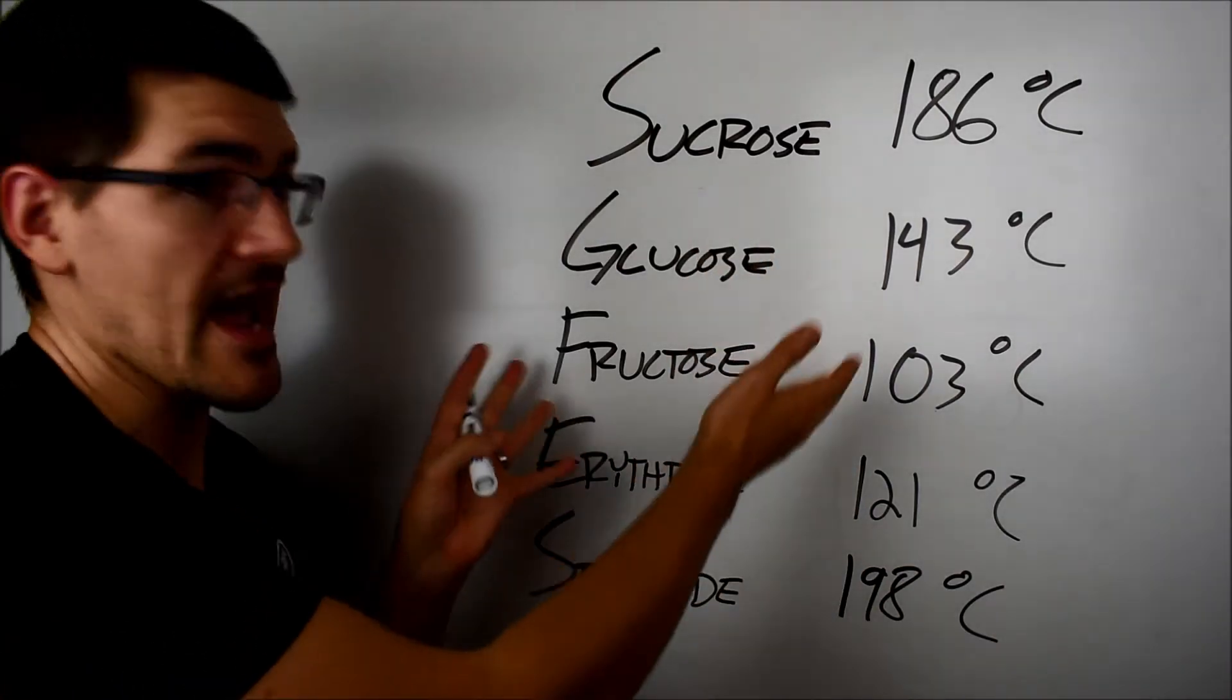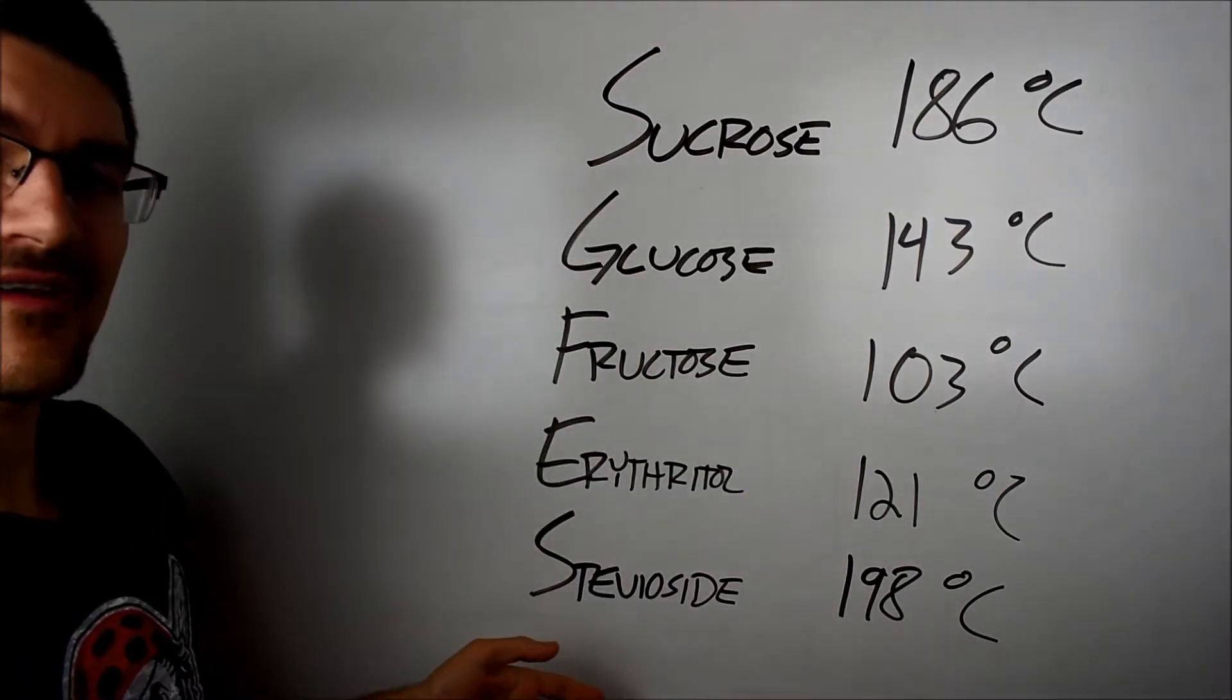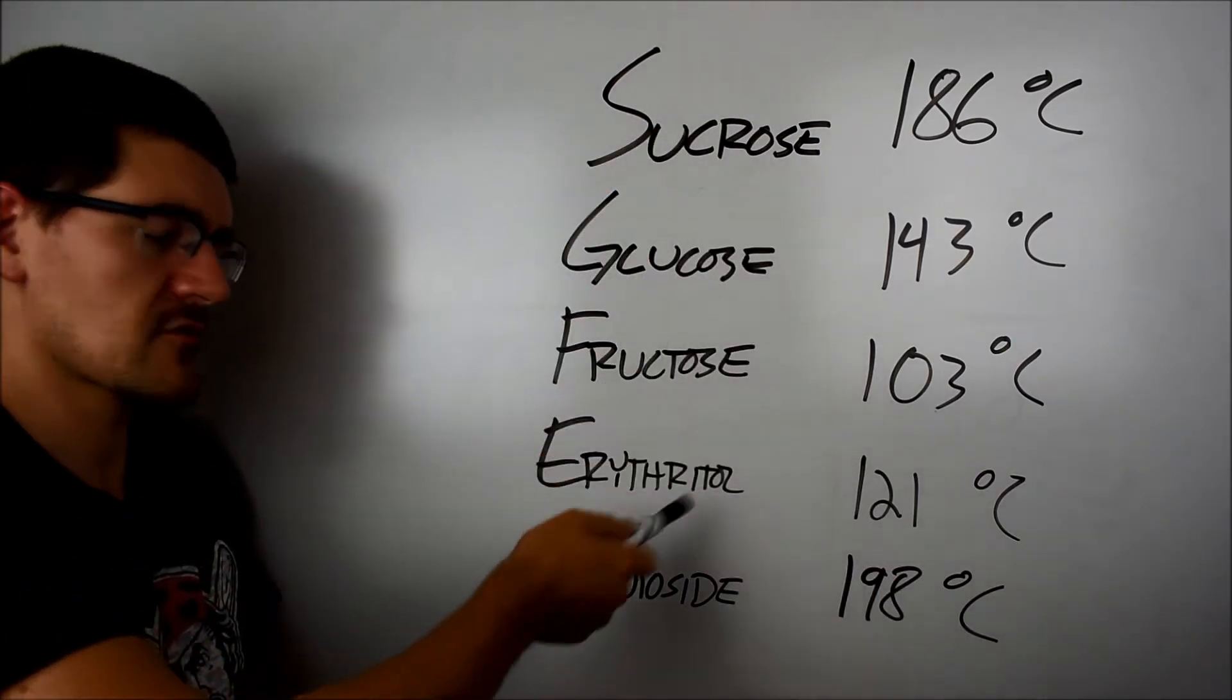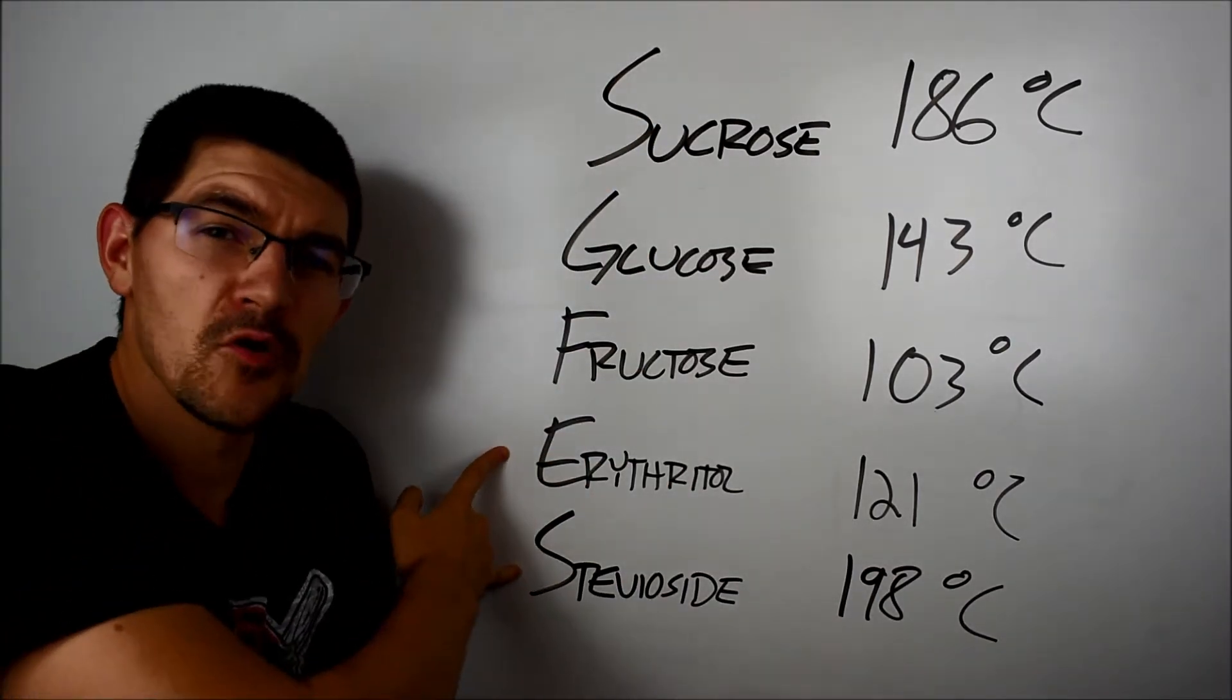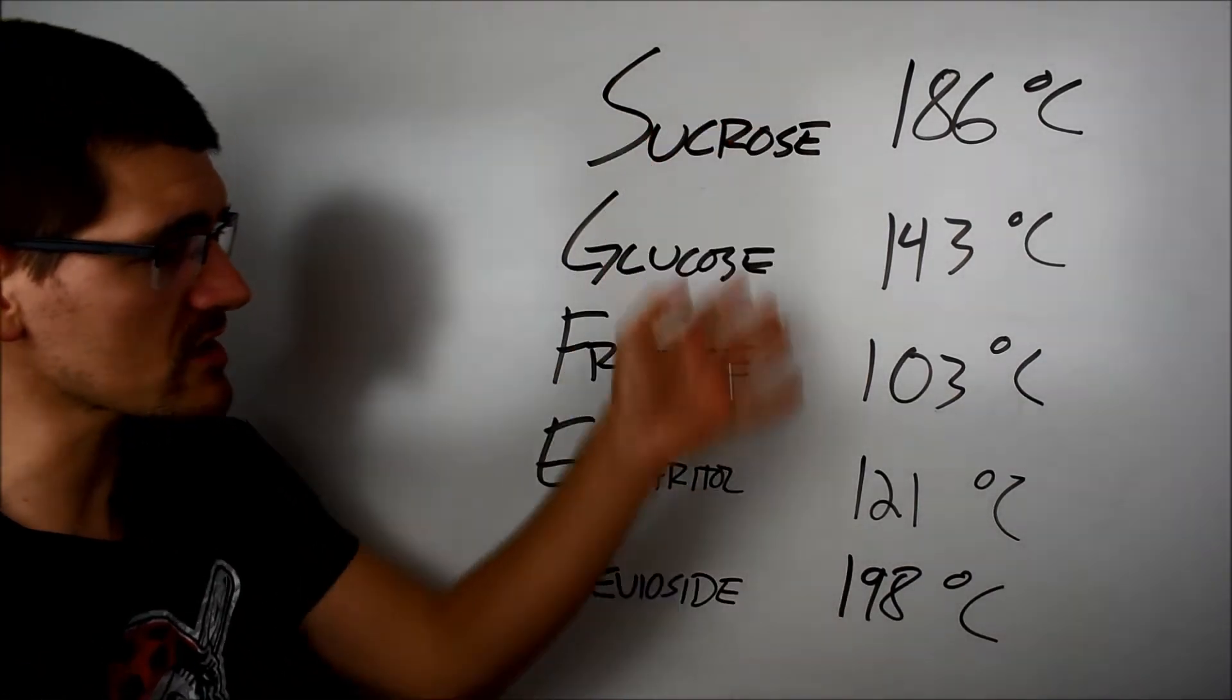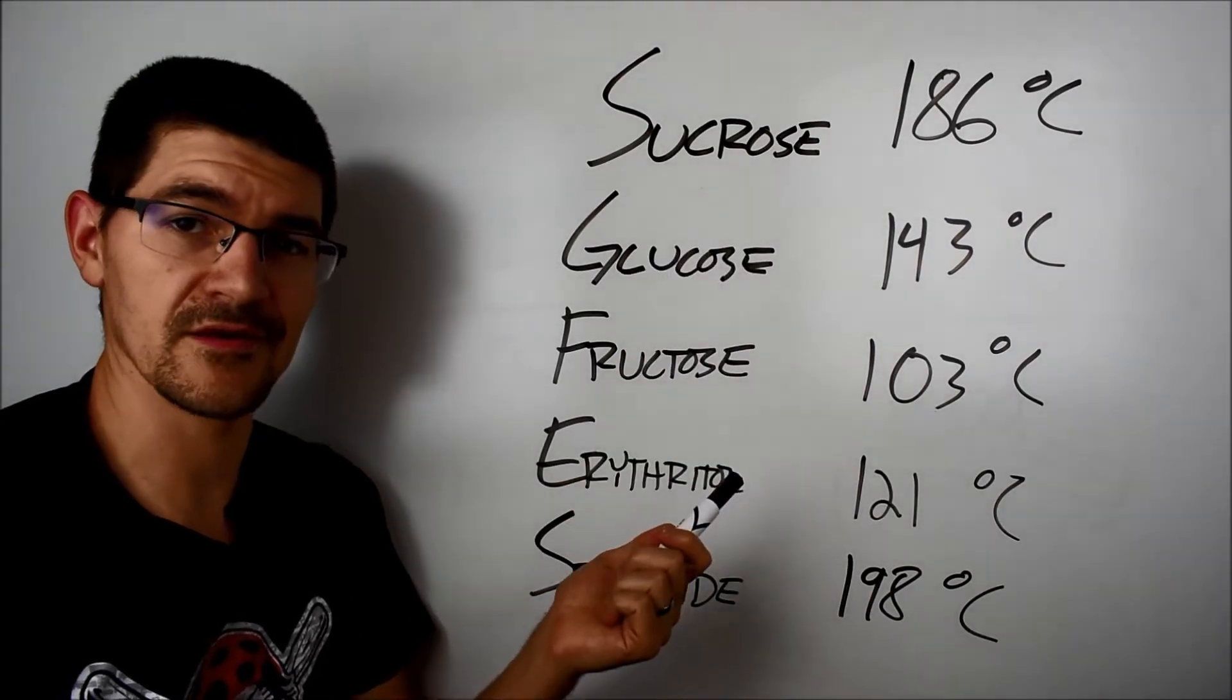So, what I have here, finally, talking about the board, are the melting points in Celsius of these five different sugar-slash-fake-sugar artificial sweeteners. Sucrose, glucose, fructose, erythritol, and steviacide. So, erythritol and steviacide both live in Truvia. And you can see that their melting points really aren't that different, they're certainly in the same ballpark, as sucrose, glucose, and fructose.